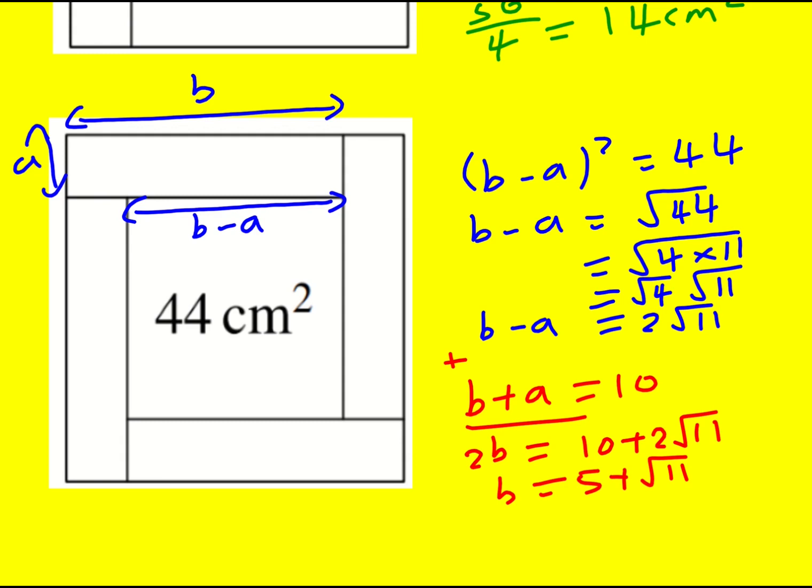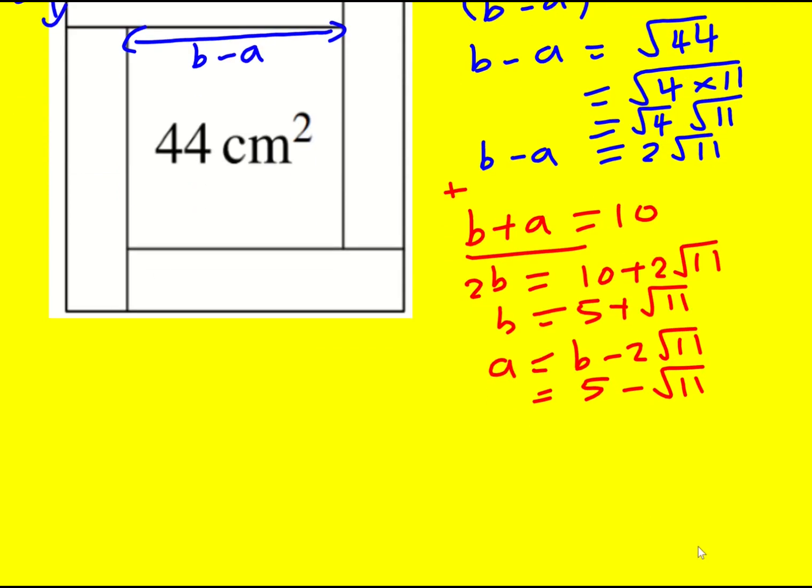So this method works by actually finding what A and B are. And then A is going to equal, I can rearrange this to be B minus 2 root 11. So it's going to be 5 minus root 11. And then I can multiply them to get A times B.